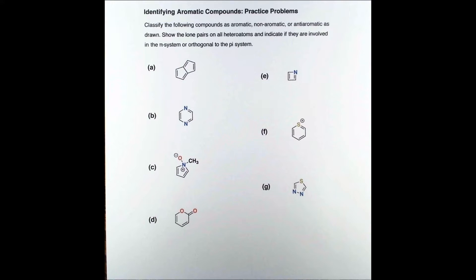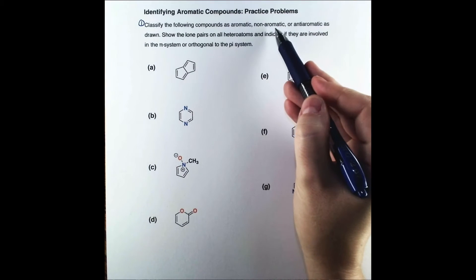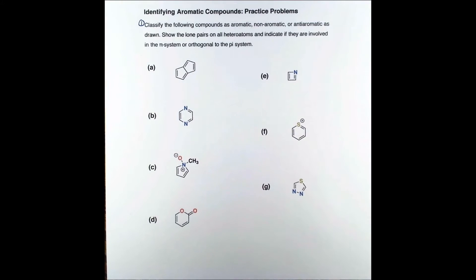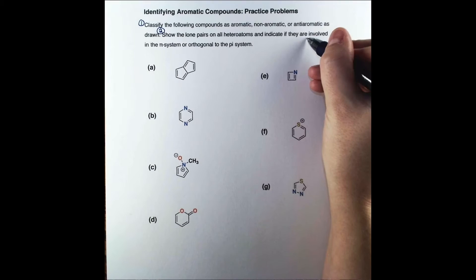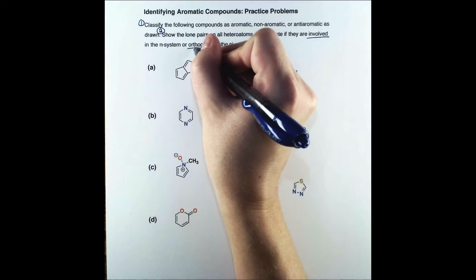Let's solve some aromaticity problems. We have a two-part question here. We need to classify the compounds as aromatic, non-aromatic, or anti-aromatic, and draw the lone pairs on heteroatoms and determine if they participate in the pie system or are orthogonal to it.